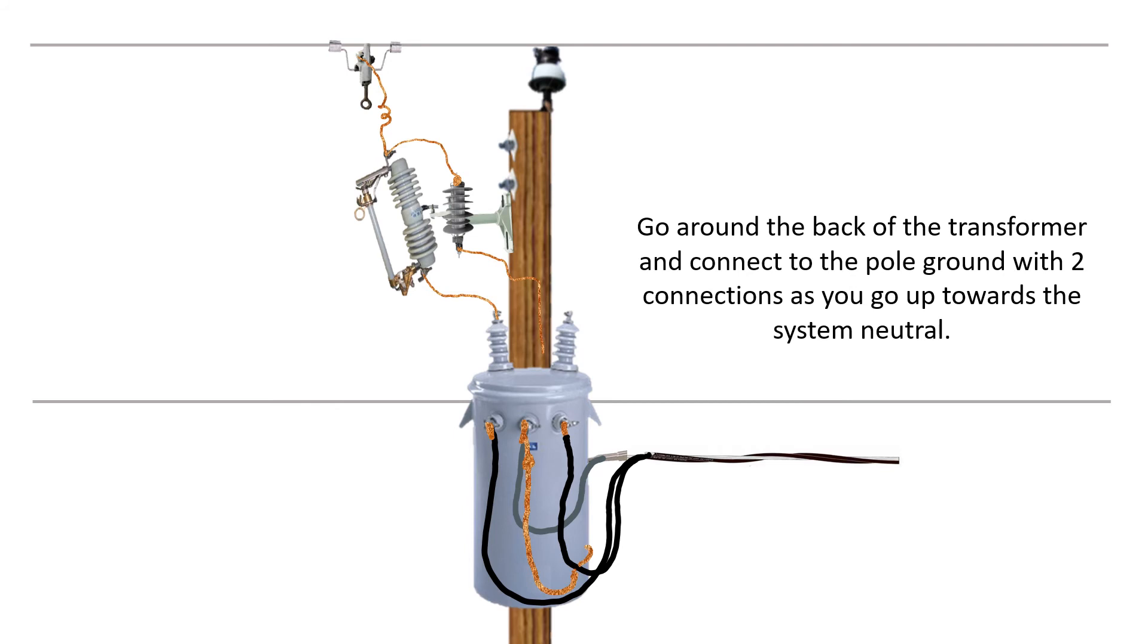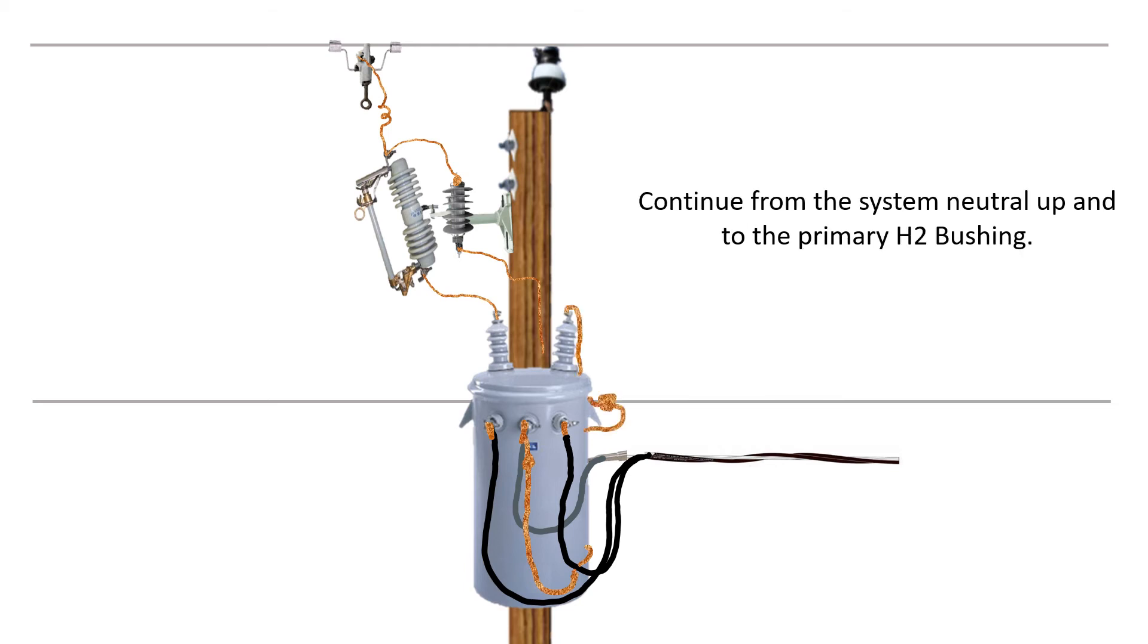Go around the backside of the transformer. Continue this with one solid wire. Go around the back of the transformer and make two connections as you go up towards the system neutral following the pole ground on the backside of that pole. Continue to the system neutral, hit the system neutral, squeeze the connection there.